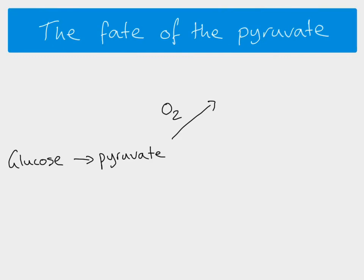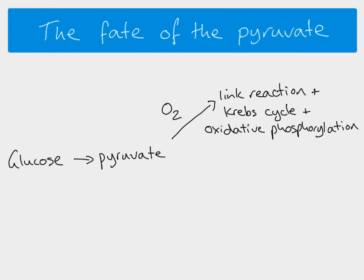...then moves into the mitochondria. And that means that the link reaction can take place, which means that the Krebs cycle can take place, and oxidative phosphorylation can take place. So as long as you've got oxygen, all of these can happen because the pyruvate molecule that's made moves into the mitochondria.